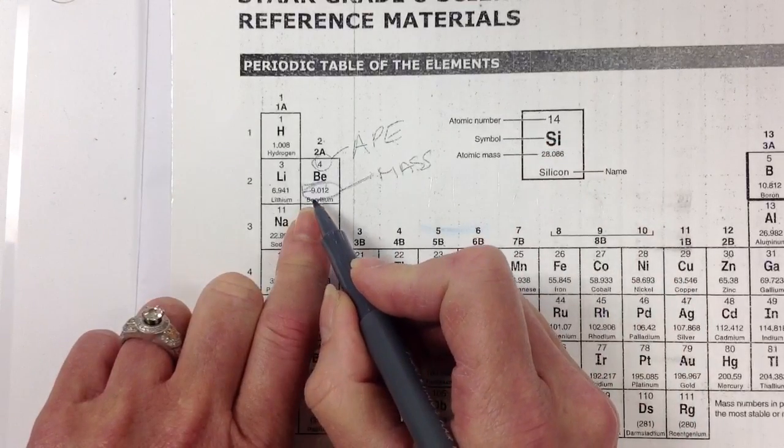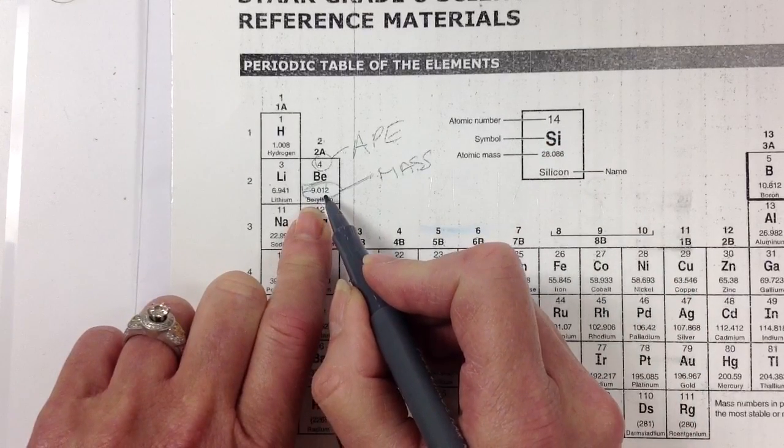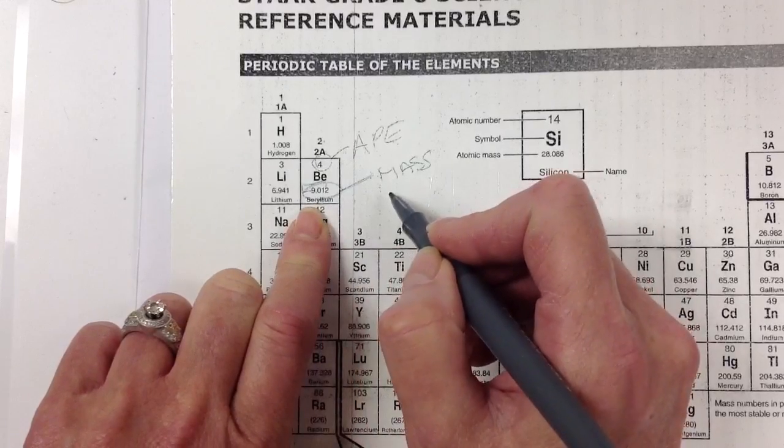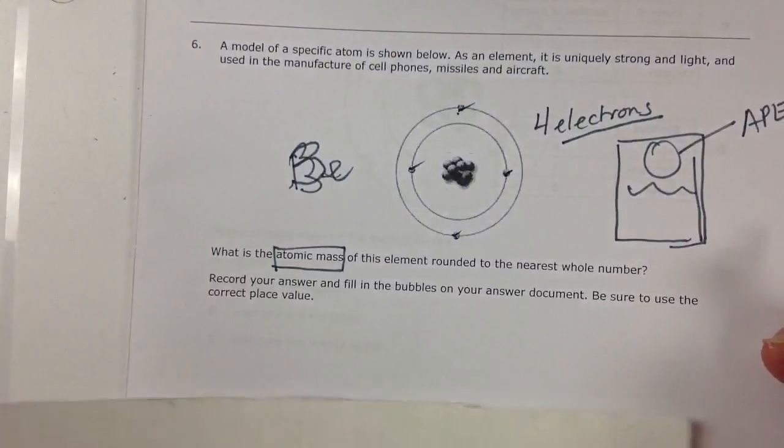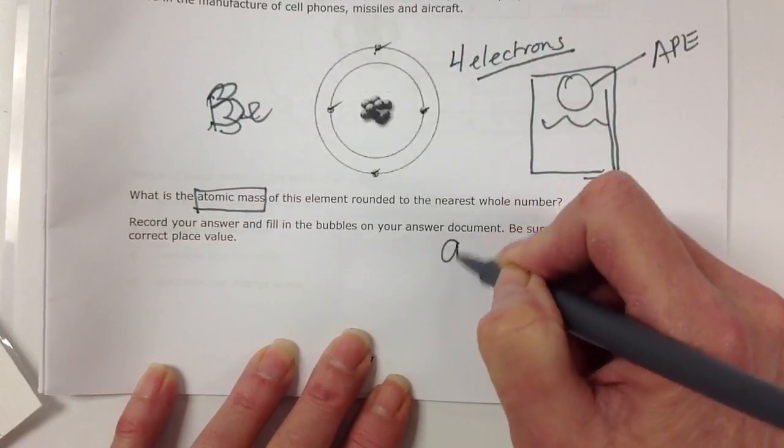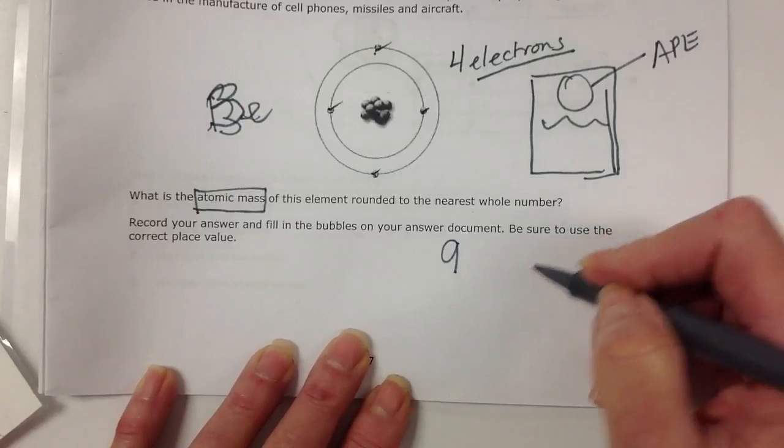The atomic mass is 9.012, so the rounded whole mass would be 9. So your answer here should have been 9, and you were to bubble it in.